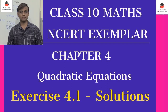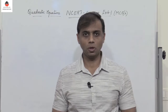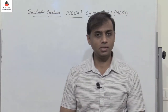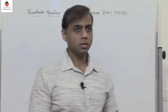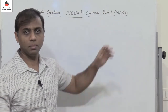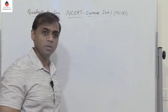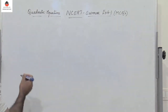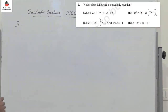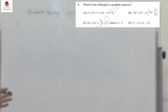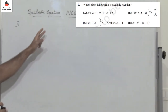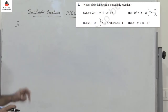Hello students. Moving on with chapter four, quadratic equations. We shall solve the problems given in the NCERT exemplar, exercise 4.1, which has multiple choice questions. The first question states: which of the following is a quadratic equation? You have four equations given and we need to identify which of them is a quadratic equation.